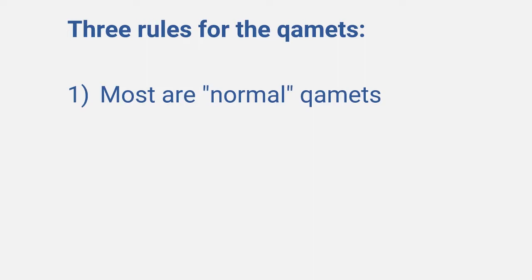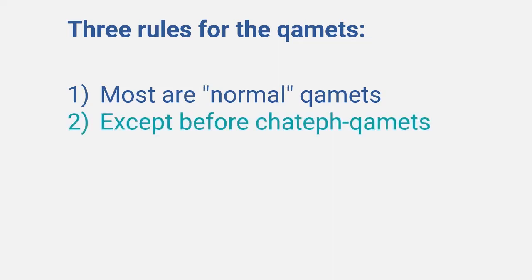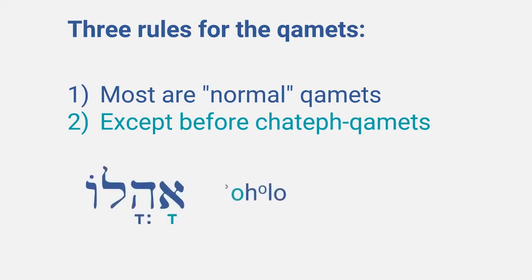The first kind of situation in which a Kametz is actually Kametz Gatuf is if the next consonant has a Khatev Kametz. That is relatively simple. Here is one example: Oholu, meaning 'his tent.'